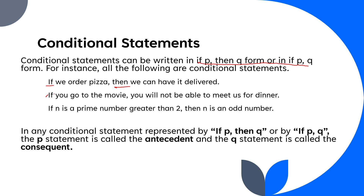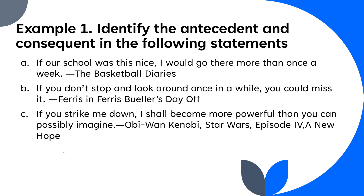In any conditional statement represented by 'if p then q' or 'if p q,' the p statement is what we call the antecedent and the q statement is called the consequent. So we have two statements, p and q, where p is the antecedent and q is the consequent.